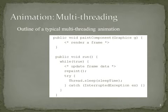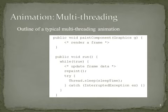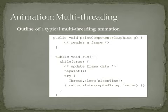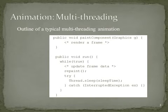The run method of the Runnable interface or the Thread class is overridden to perform the animation. It typically contains an infinite loop to continuously generate frames. A frame is rendered by calling the repaint method. Between two frames, the thread typically sleeps for a specific time. The sleep method of the Thread class specifies a sleep time in milliseconds.